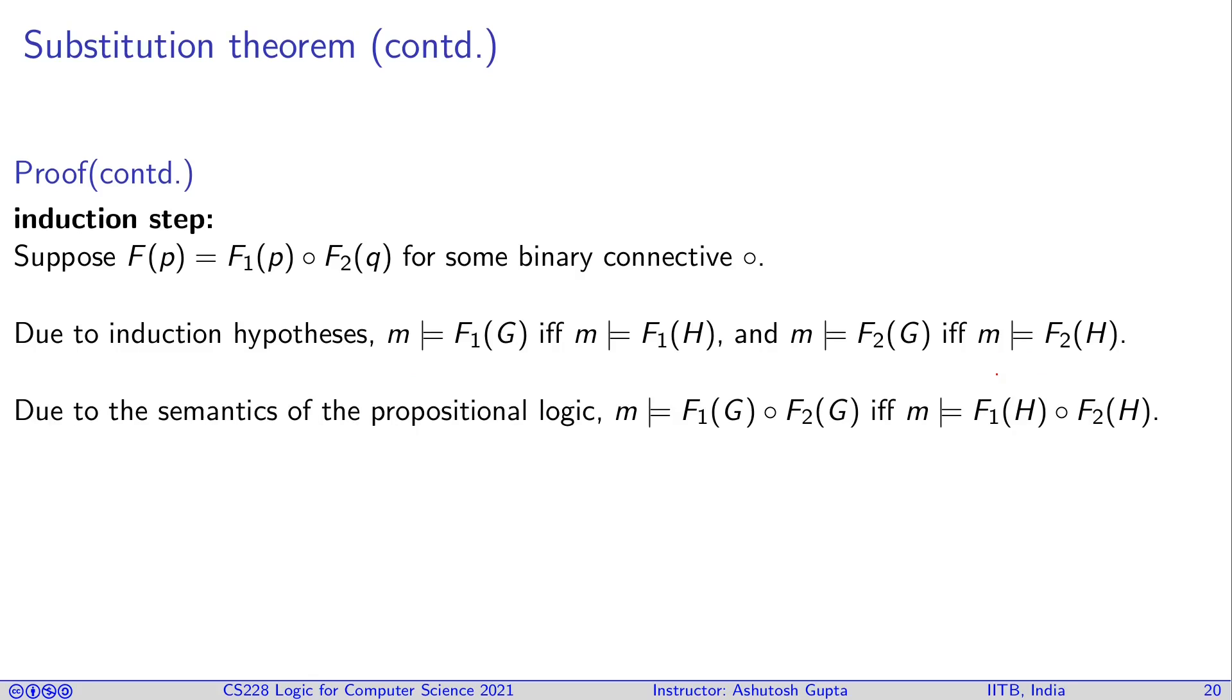What we need to do is go through the truth table of each binary operator and work out that this will hold true. Then m will satisfy F(G) if and only if m satisfies F(H). This is very easy to do—just draw the truth tables, match the rows, and you'll see it works. Therefore, this theorem holds true. We haven't considered the negation case when F = ¬F₁, but a similar process follows. If you want to convince yourself, please write down the extended version of this proof.